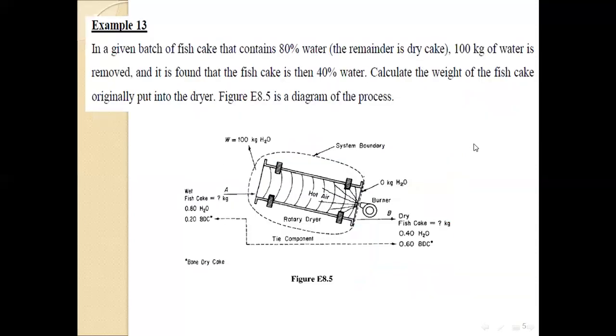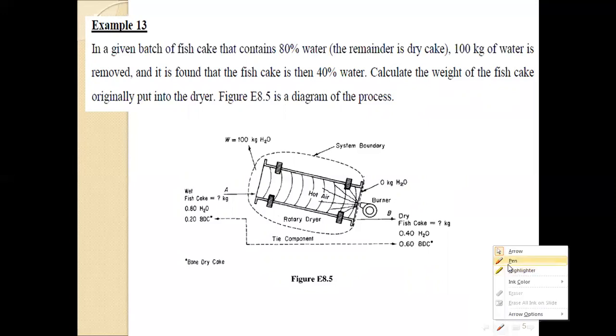Another example is about a drying process. A given batch of fish cake contains 80% water, the remainder is dry cake or solid material. 100 kilograms of water is removed and it is found that the fish cake is then 40% water. Calculate the weight of the fish cake originally put into the dryer.